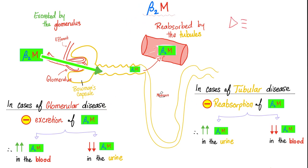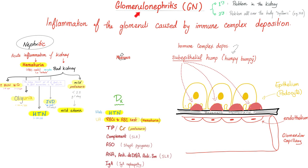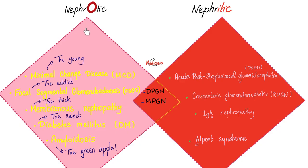If you remember post-streptococcal glomerulonephritis, it was also a nephritic syndrome. In acute post-streptococcal GN, we saw subepithelial humps because of the deposits. Do we see anything like this in Goodpasture? The answer is no. Goodpasture has a different pathology — antibodies attacking the glomerular basement membrane. To see those antibodies, you need immunofluorescence techniques. Nephrotic syndromes include minimal change disease, focal segmental glomerulosclerosis, membranous nephropathy, diabetic nephropathy, and amyloid nephropathy.